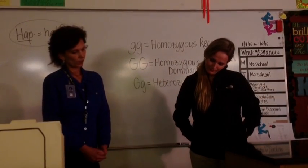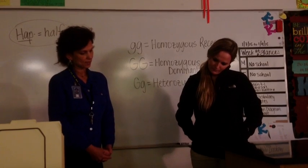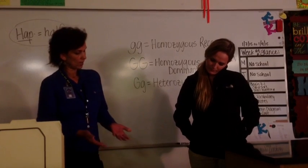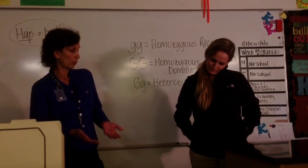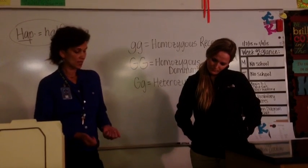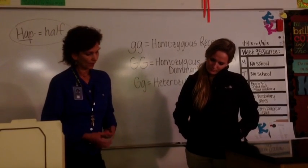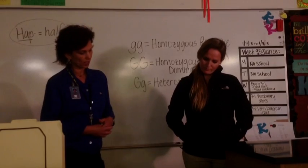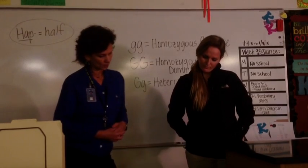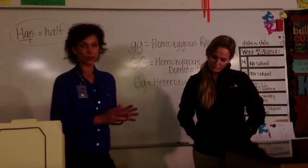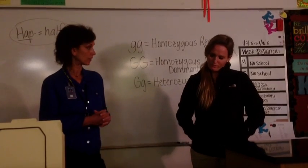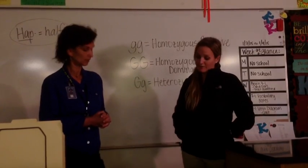Homozygous dominant will always be expressed with two capital letters, while homozygous recessive will be two lowercase letters. So if both alleles are recessive, that would be homozygous recessive, and both of them would be lowercase letters, right? Exactly.